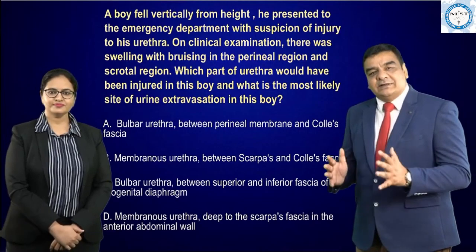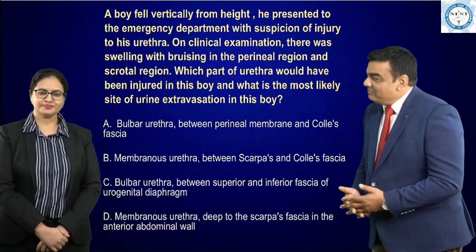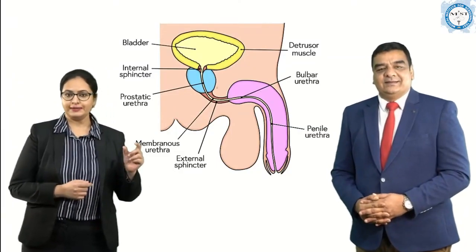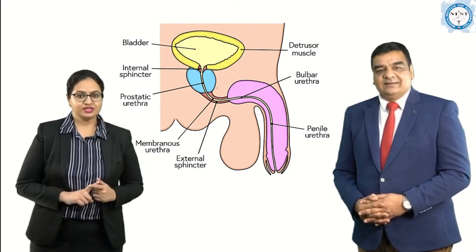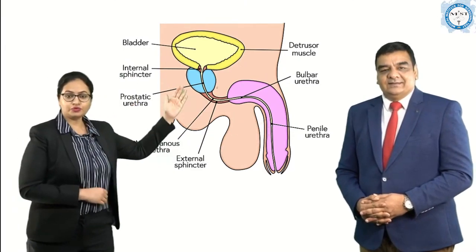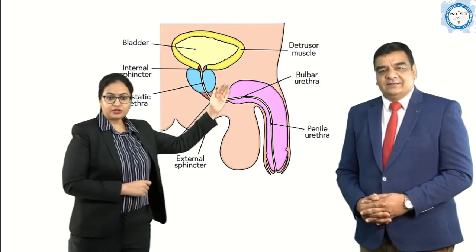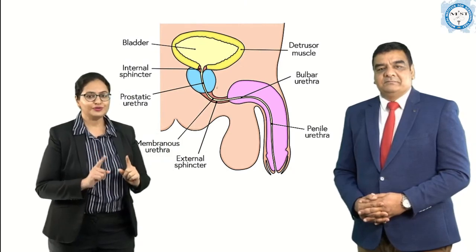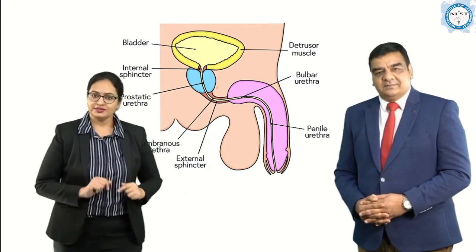Before we move on with the discussion, it is imperative to know the different parts of the male urethra. According to the latest editions of surgery textbooks — Love and Bailey — and Gray's Anatomy, the urethra is divided into the anterior urethra and the posterior urethra. In the anterior urethra, the portion in the perineal region is termed the bulbar urethra, also called the perineal urethra, and the rest anteriorly is the penile or spongy urethra.